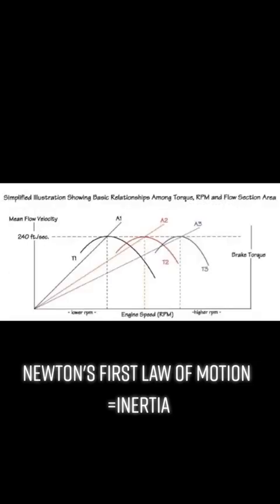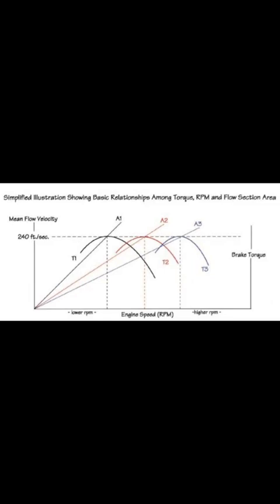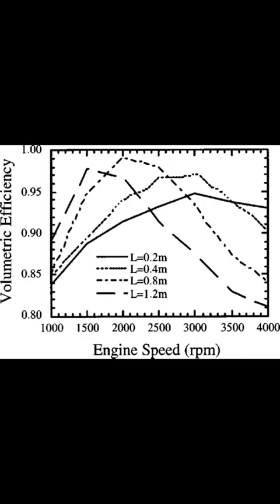So we need to create enough inertia, enough weight, enough speed to keep filling that cylinder as the cylinder volume is reducing and the pressure is rising. And the optimal point is right before the air stalls, we want to shut that valve.